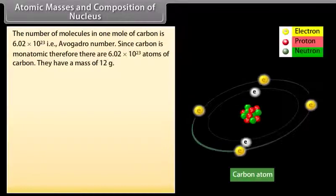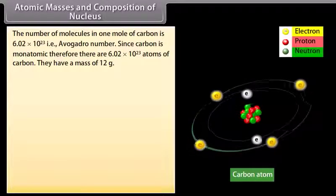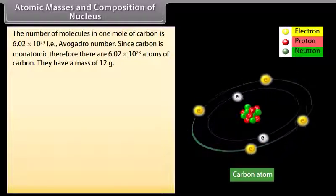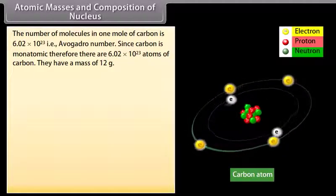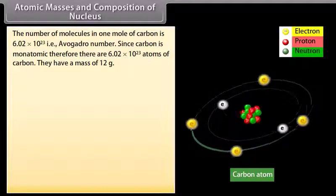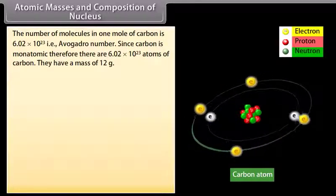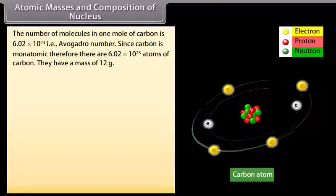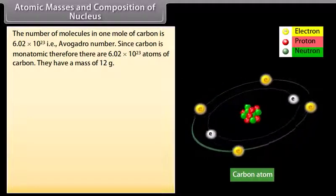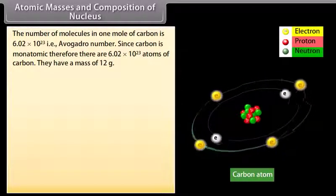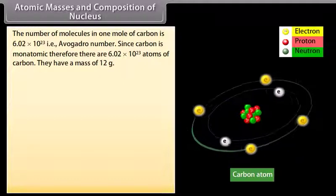Atomic masses and composition of nucleus. The number of molecules in one mole of carbon is 6.02 times 10 to the power 23, that is, Avogadro number. Since carbon is monoatomic, therefore, there are 6.02 times 10 to the power 23 atoms of carbon. They have a mass of 12 gram.